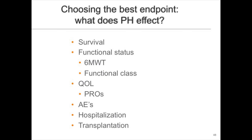Choosing the best endpoint: we have to think about what PH affects, because choosing the right phenotype is the first step, but getting the endpoints right is equally important. What does PH affect in the context of ILD? Survival, functional status, functional class, quality of life — certainly. Possibly acute exacerbations, hospitalization, yes. Transplantation, possibly. These are our choices of endpoints when we institute these clinical trials.